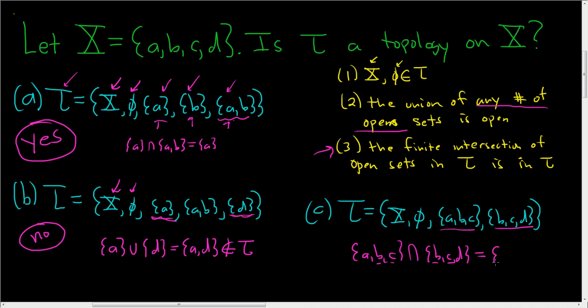Okay, it's kind of weird. So this is BC. Oh, but wait, that's not in tau. So we took a finite intersection of elements of tau, and the result was not in tau. So the answer here is no, it's not a topology. So I hope that made sense.